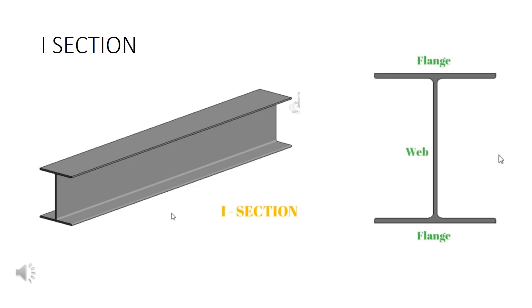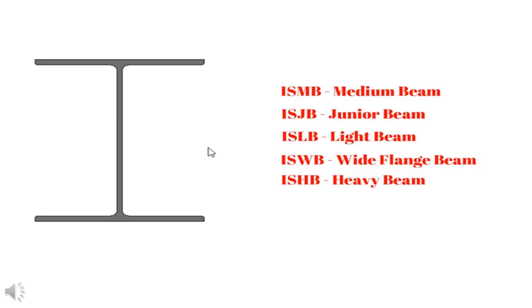The I-section is used in railways and is a modified I-section. It has an I-shape, also called an eye section. It has a web and flanges. The designations for the I-section include ISMB — Medium Beam, ISJB — Junior Beam, ISLB — Light Beam, ISWB — Wide Flange Beam, and ISHB — Heavy Beam.